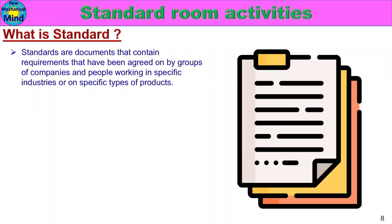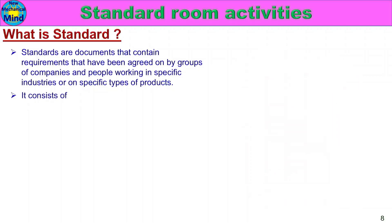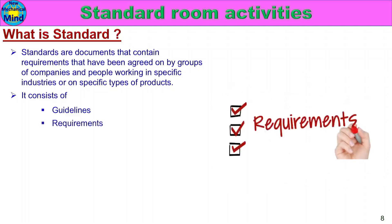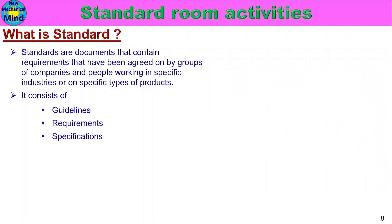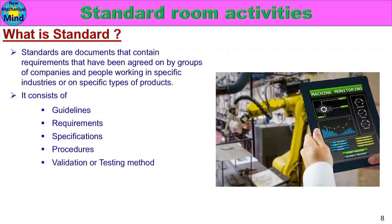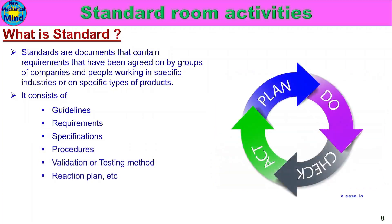What is Standard? Standards are documents that contain requirements that have been agreed on by groups of companies and people working in specific industries or on specific types of products. A standard is a document prepared when a group of companies agrees on requirements. It consists of: Guidelines, Requirements, Specifications, Procedures, Validation or Testing Methods, Reaction Plan, and more.